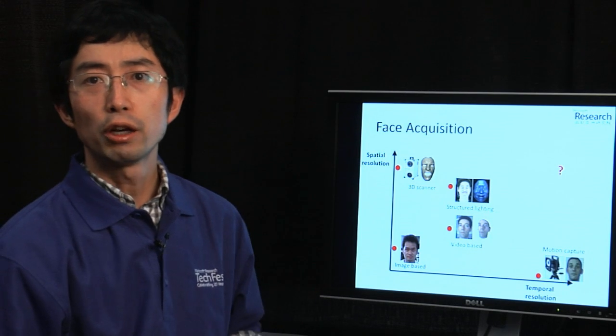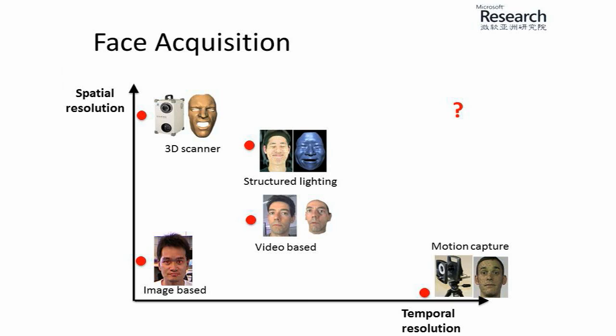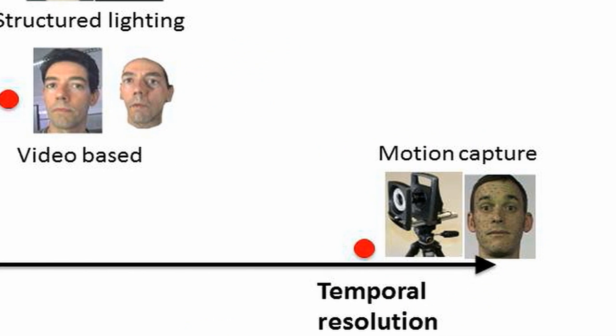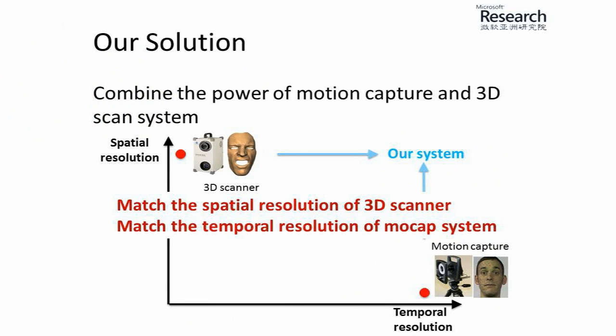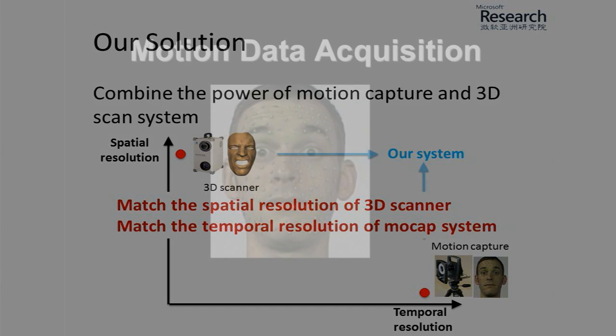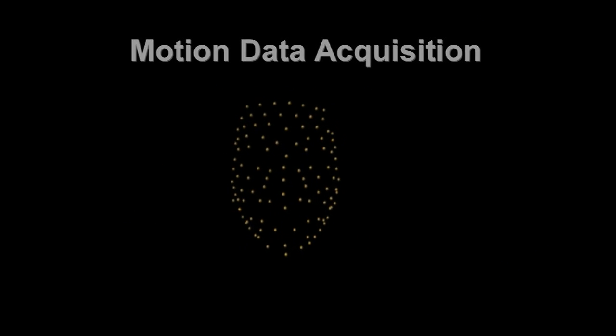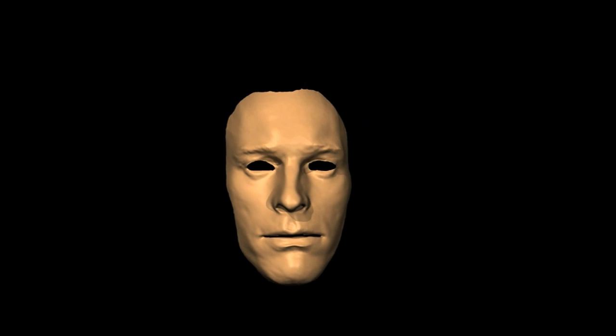There are a lot of existing works. However, no one can achieve both the high spatial resolution and high temporal resolution. Our system first achieved this goal by combining the power of the 3D scanner and the motion capture system, so that we can achieve both high temporal resolution and high spatial resolution. We can represent our system using a linear combination of the high resolution 3D faces.